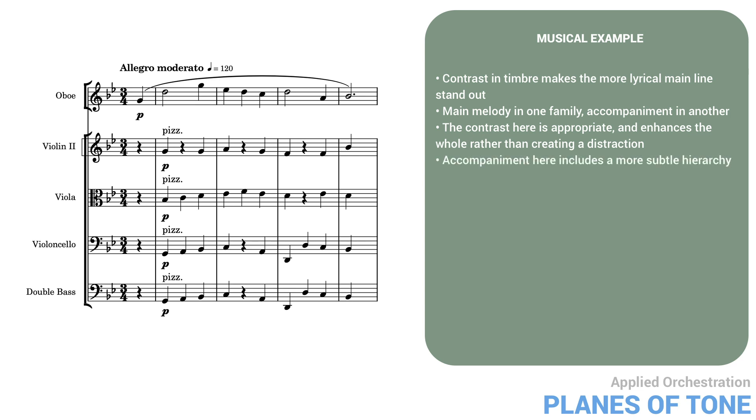We should also mention that the accompaniment here includes a more subtle hierarchy. The bass line is doubled in octaves, in addition to being the furthest away from the oboe in register. The bass line and the oboe line make up a solid two-part counterpoint. The inner parts in the pizzicato accompaniment are a bit less in evidence. They blend into the harmonic mass.